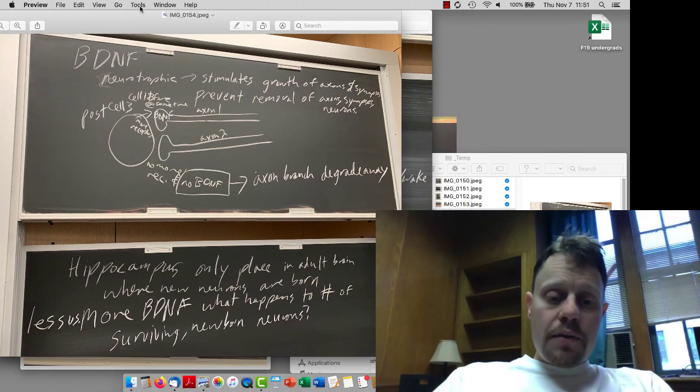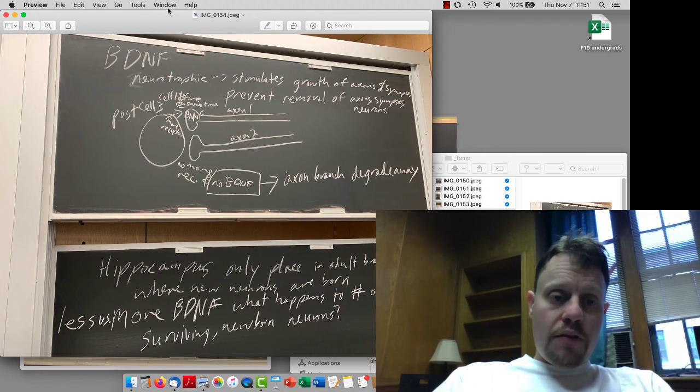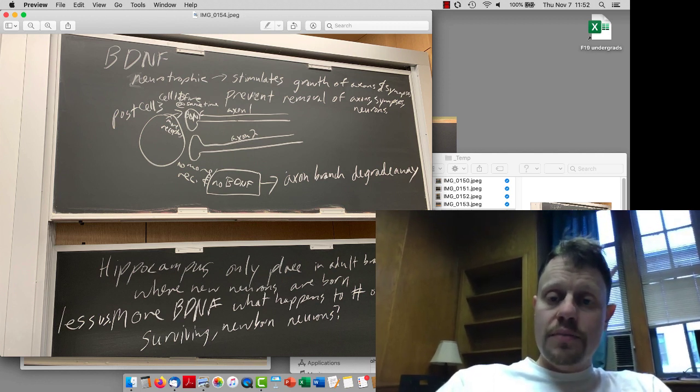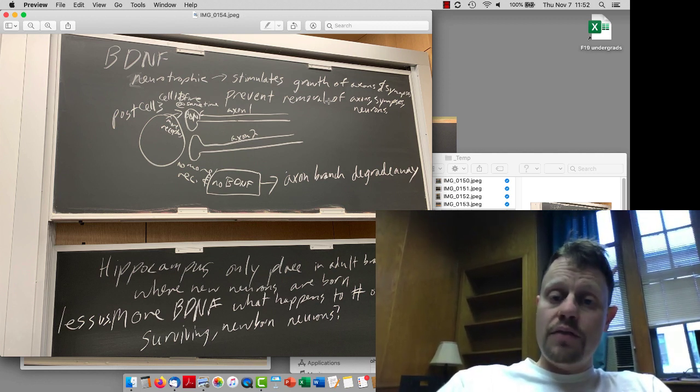We then talked about something sort of different, which is brain-derived neurotrophic factor. Brain-derived neurotrophic factor is, neurotrophic factors in general stimulate the growth of axons and synapses and prevent axons, synapses, and neurons from being removed or dying.